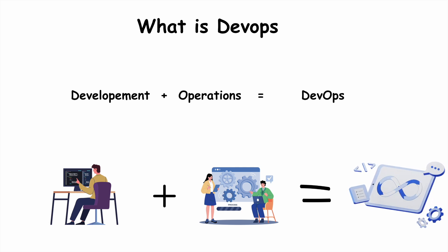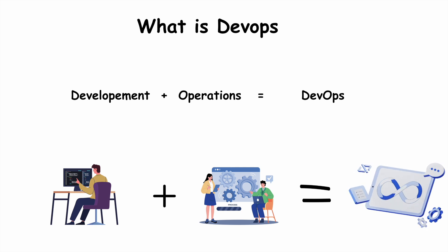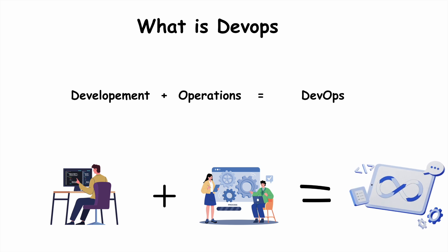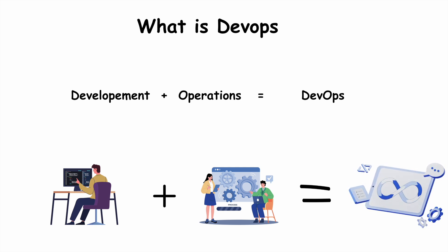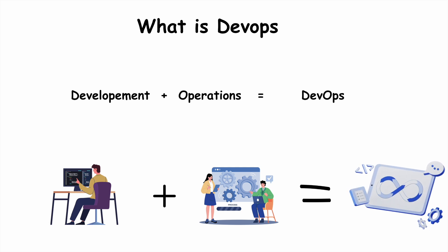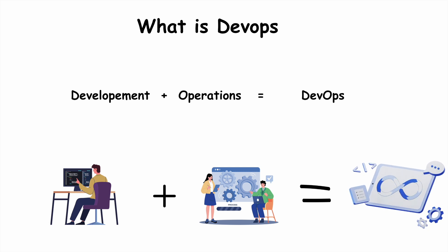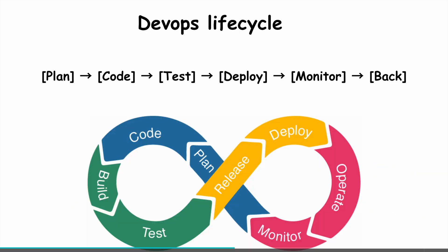They share goals, communicate openly, and help each other. DevOps also uses automation, which means letting computers do repetitive tasks like testing code and releasing updates automatically. This saves a lot of time and reduces mistakes that can happen when people do these tasks by hand. In short, DevOps makes the whole process smoother, faster, and more reliable by combining people, processes, and technology.